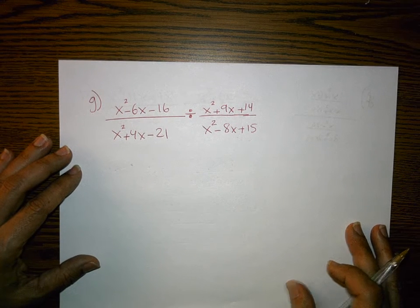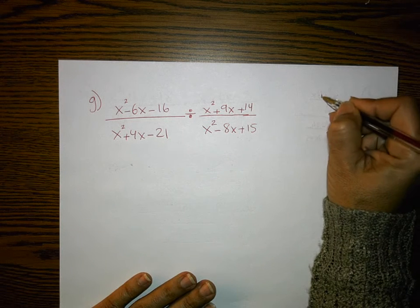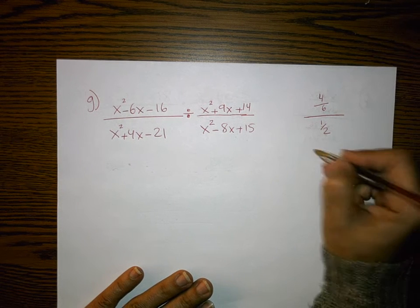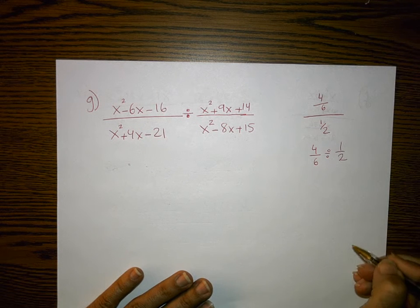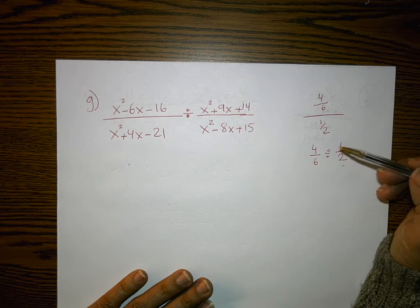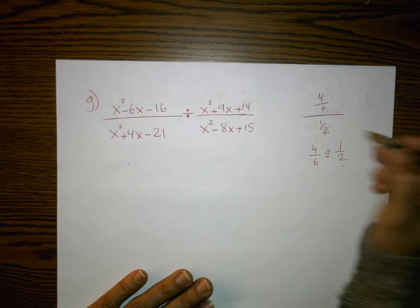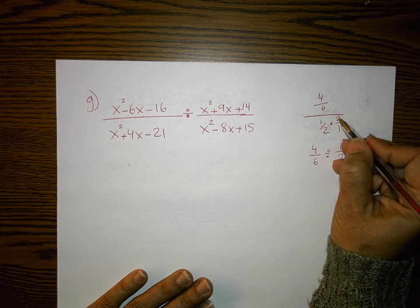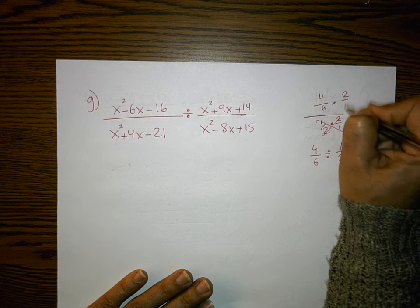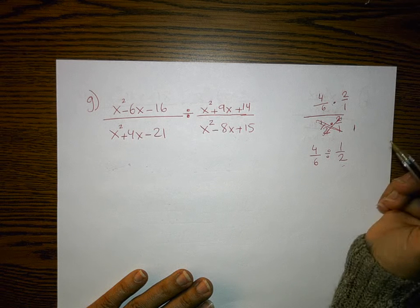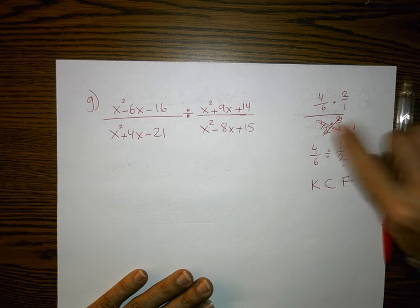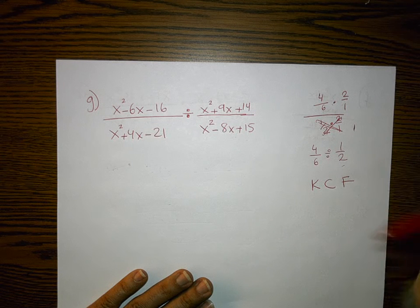With numbers, if I'm dividing — say, 4/6 divided by 1/2 — division of a fraction by another fraction means I can multiply by the reciprocal to eliminate the denominator. Multiplying by 2/1 in the denominator and numerator reduces the division. This is what students call the 'keep, change, flip' method: keep the first fraction, change division to multiplication, and flip the second fraction to its reciprocal.